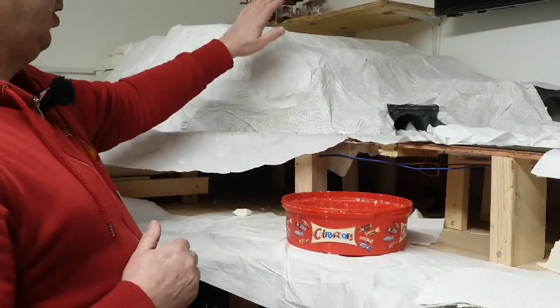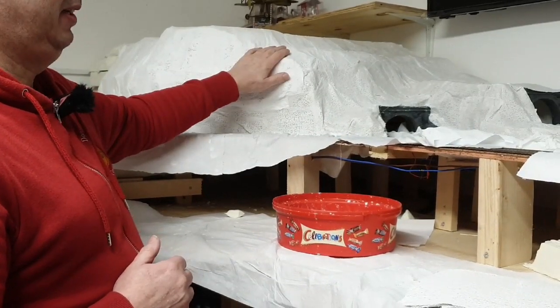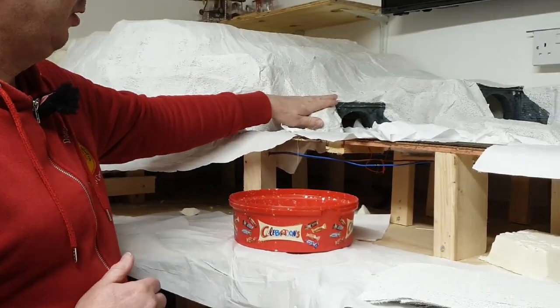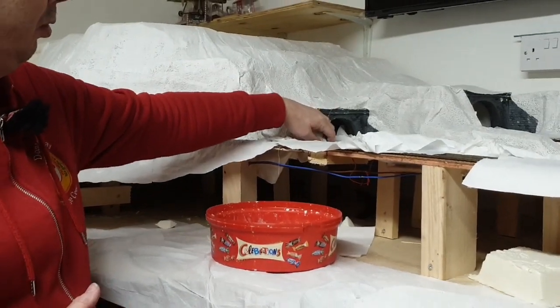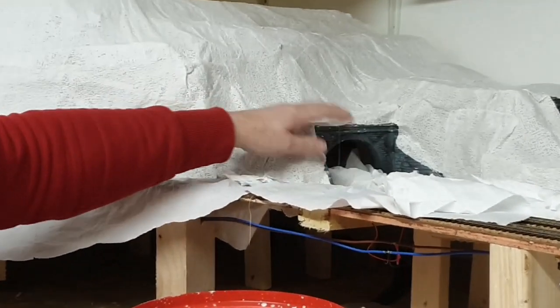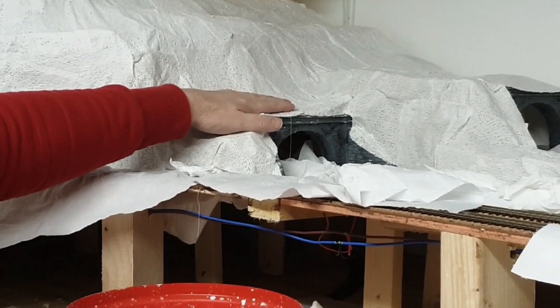So here's the progress so far. We have one layer of the plaster bandage down. I've put the tunnel portals in place. These I've just screwed in at the bottom onto pieces of wood to secure them in place then wrapping the bandage around them.